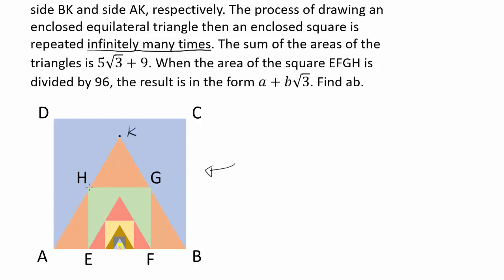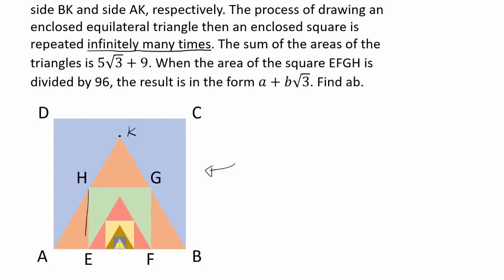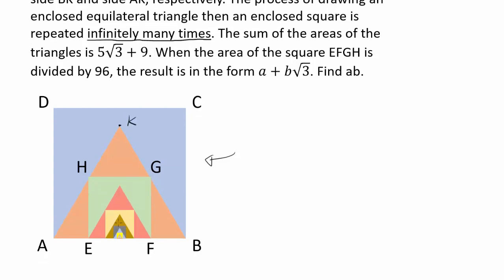So you can tell you're drawing another — you have square EFGH — you're drawing another equilateral triangle, you're drawing another square, another equilateral triangle, and you're doing this infinitely many times.